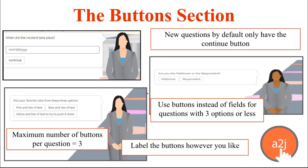You can only have three buttons per page, but you can label those buttons however you'd like. You can use buttons instead of fields for questions with three options or less. For example, 'Pick your favorite color from these three options' — you can have 'Pink,' 'Blue,' and 'Yellow' as your three buttons. This is a great way to display options instead of using checkboxes, radio buttons, or a text field.